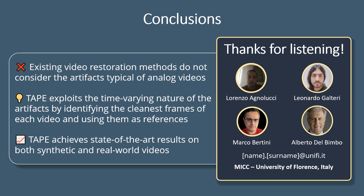In conclusion, we have seen that the main limitation of existing video restoration methods is that they do not consider the artifacts typical of analog videos. To address this problem, we propose TAPE, an approach for analog video restoration that takes advantage of the time-varying nature of the artifacts by identifying the cleanest frames of each video and then using them as references, thanks to our SwinU-Net architecture. Our experiments show that TAPE achieves state-of-the-art results on both synthetic and real-world videos. Thanks for your attention, feel free to reach out if you have any questions.